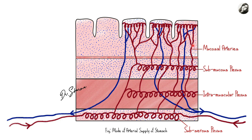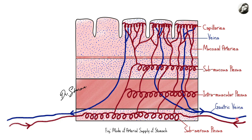These mucosal arteries pierce the muscularis mucosa, communicate with each other, and break into a rich network of capillaries. The veins arise from here and after passing through all the layers again, they join the gastric veins. These are the corresponding veins of the arteries, and the arteries of the submucosal plexus are associated with these corresponding veins.